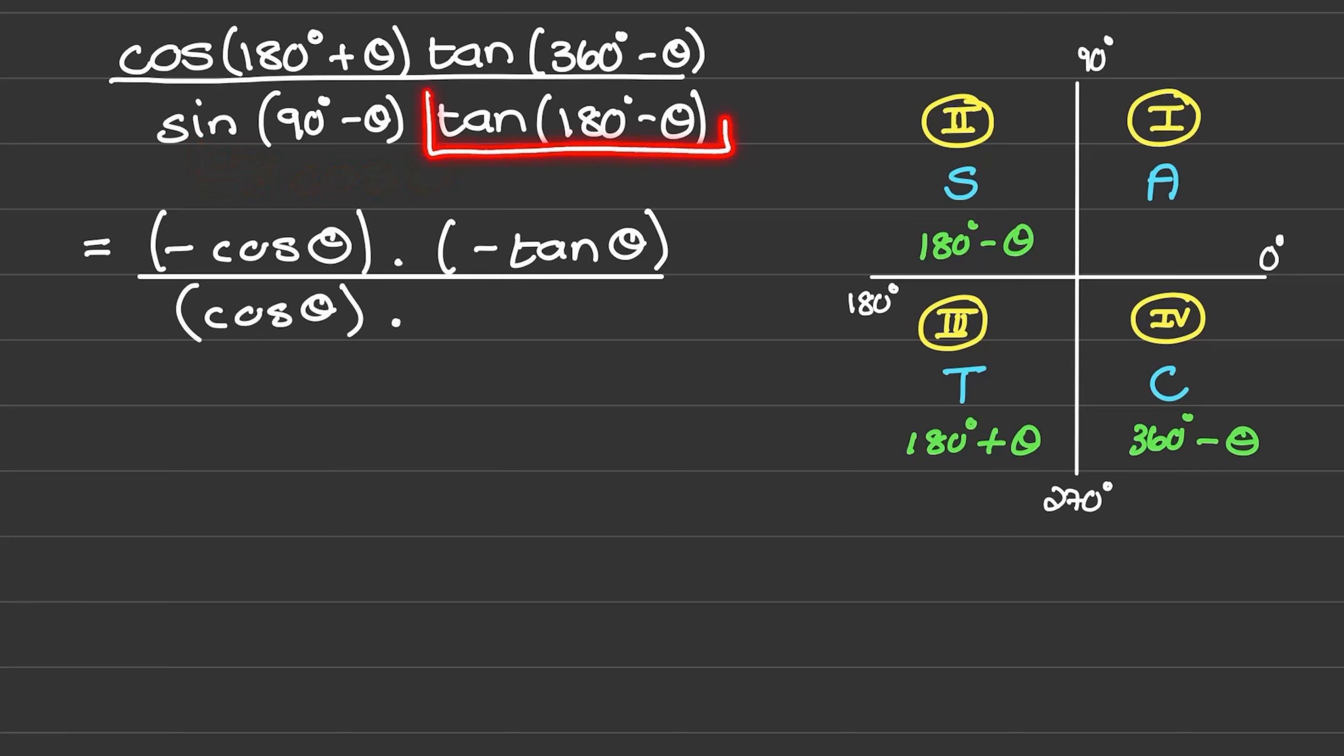And lastly we have tan of 180 degrees minus theta, which is in the second quadrant. The tangent is negative in the second quadrant, so it will reduce to negative tan of theta.